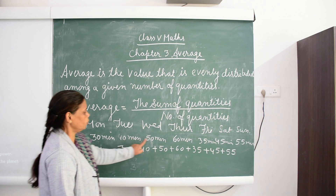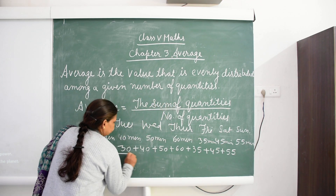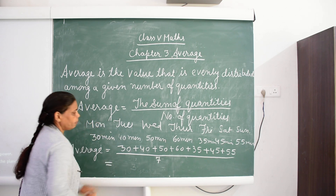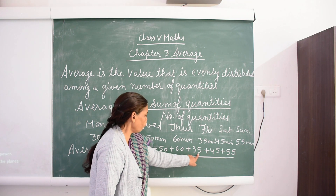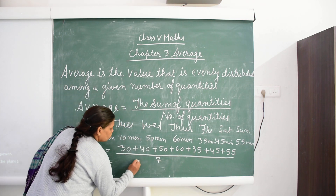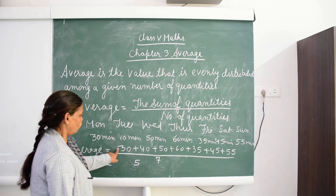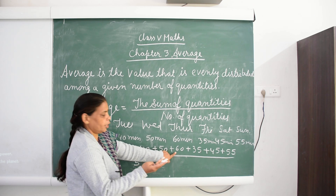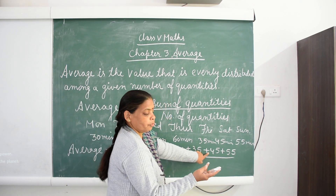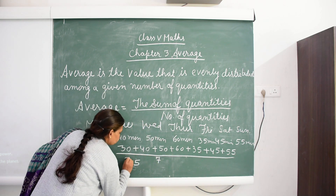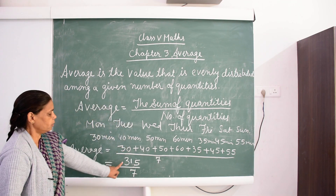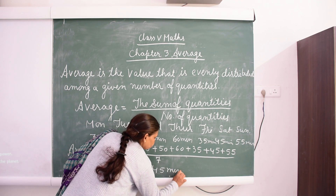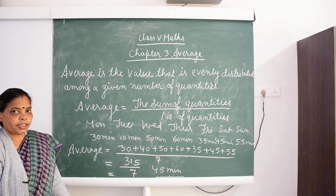The number of quantities is 7. When we add them: 30 plus 40 plus 50 plus 60 plus 35 plus 45 plus 55, the sum is 315. Upon 7. When we divide 315 by 7, we get 45 minutes. So the average study time is 45 minutes per day.